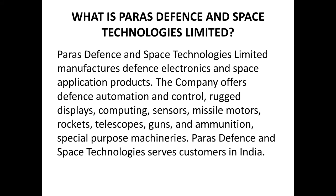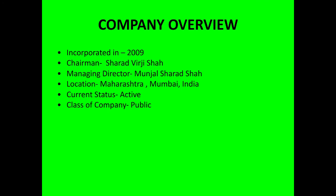Paras Defense and Space Technologies serves customers in India. It was incorporated in 2009. The chairman of the company is Sharad Virji Shah and the managing director is Munjal Sharad Shah. It is located in Maharashtra, Mumbai, India and the current status is active and the class of company is public.